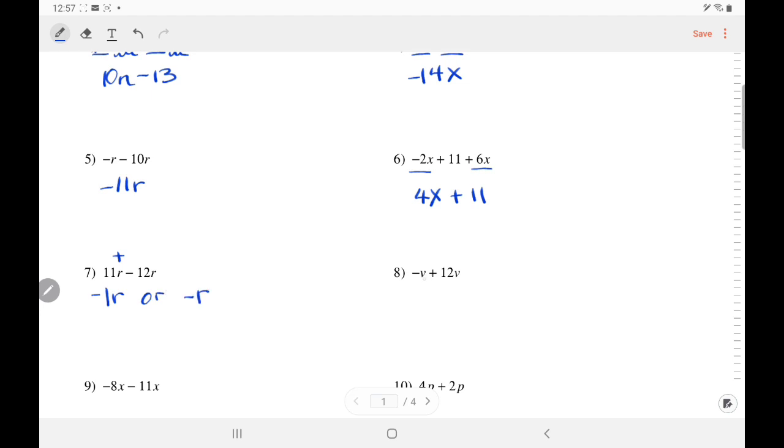Over here, we have an invisible 1 again. So, negative 1 plus 12. We're adding opposite signs. So, we subtract. 12 minus 1 is 11. Take the sign of the stronger number, 12, which is positive.